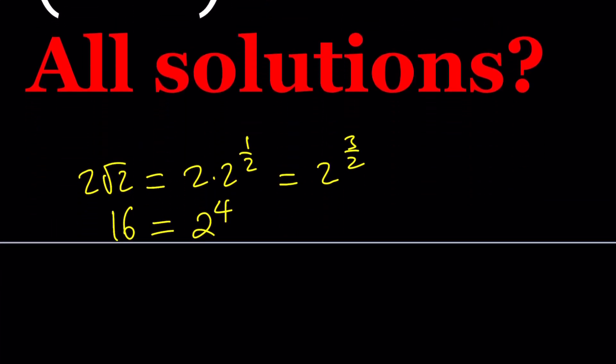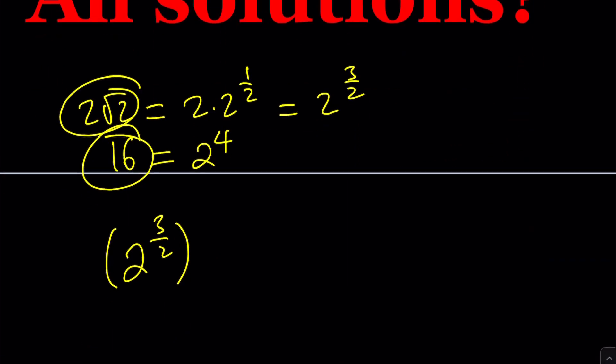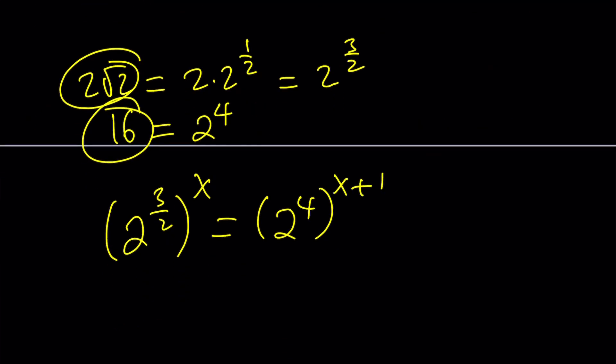So now let's go ahead and replace these numbers with their counterparts. 2 to the power of 3 halves, and that is going to be raised to the power of x. And then 16 is 2 to the 4th, and that's going to be raised to the power of x plus 1. So that looks simple, right? I mean, once you do that conversion.